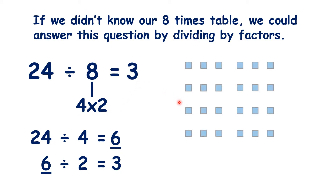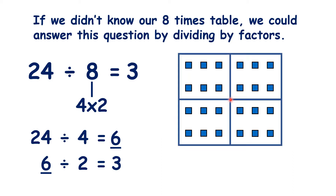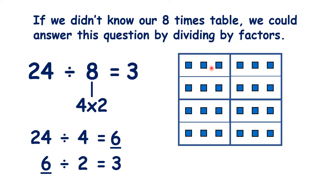And again, we can show this visually. Here we have 24 cubes. Let's first divide them into 4 groups, just as we divided by 4 here. Now let's divide each of those groups by 2, like we did here. You can see that by doing this, we now really have our 24 cubes divided into 8 small rectangles. And because we have 3 in each group, we know that our answer is 3.